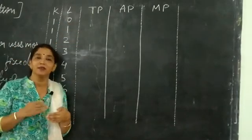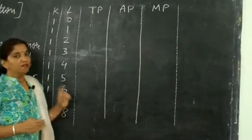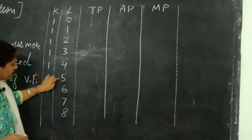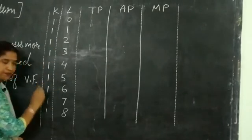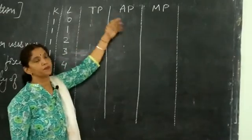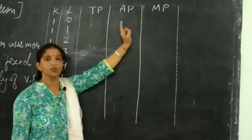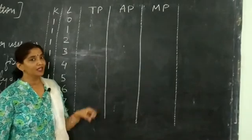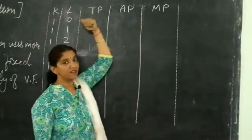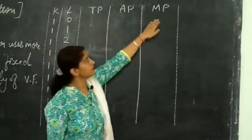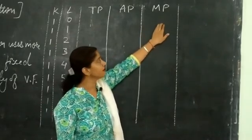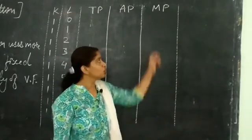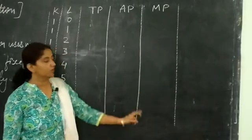I am increasing laborers one by one — one additional unit at a time: 1, 2, 3, 4, 5, 6, 7, and 8 laborers. Now for TP and AP, I will write those later. First, fill the column for marginal productivity. Marginal productivity starts from a minimum, increases, reaches a maximum, then starts declining, becomes 0, and then becomes negative.